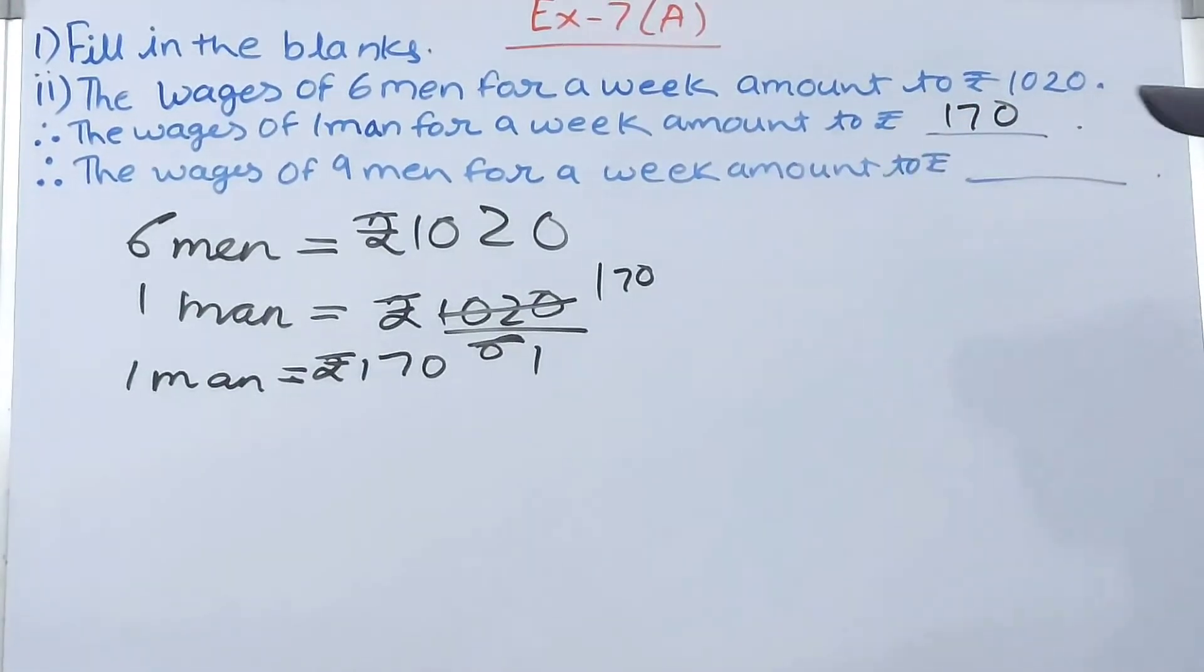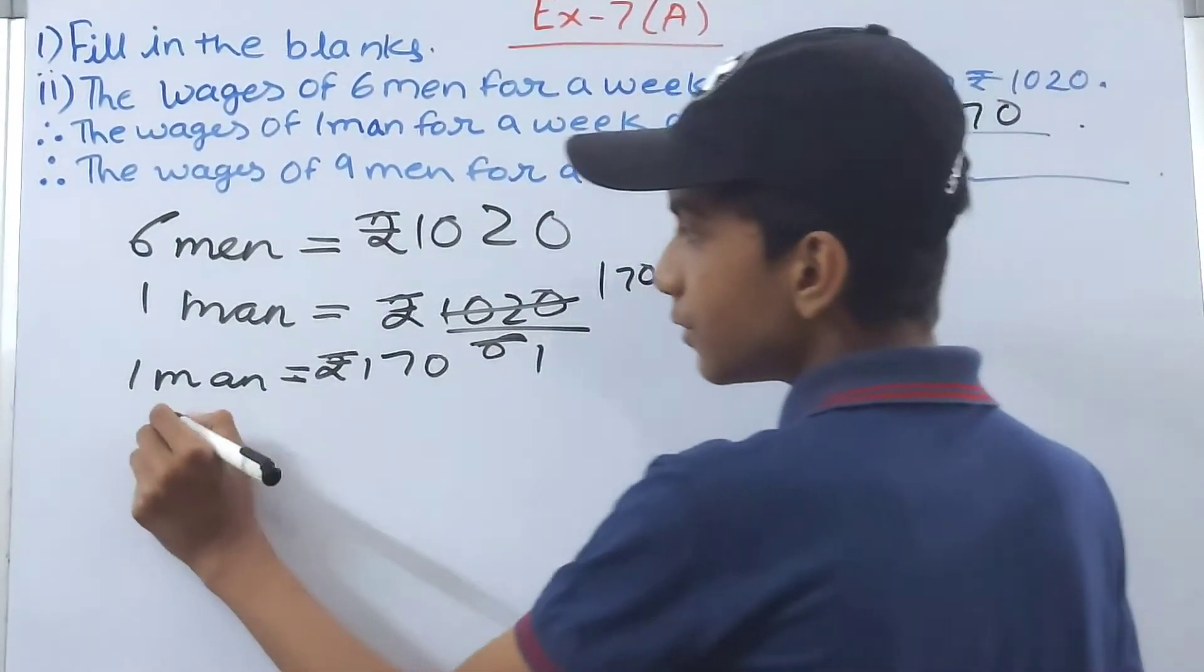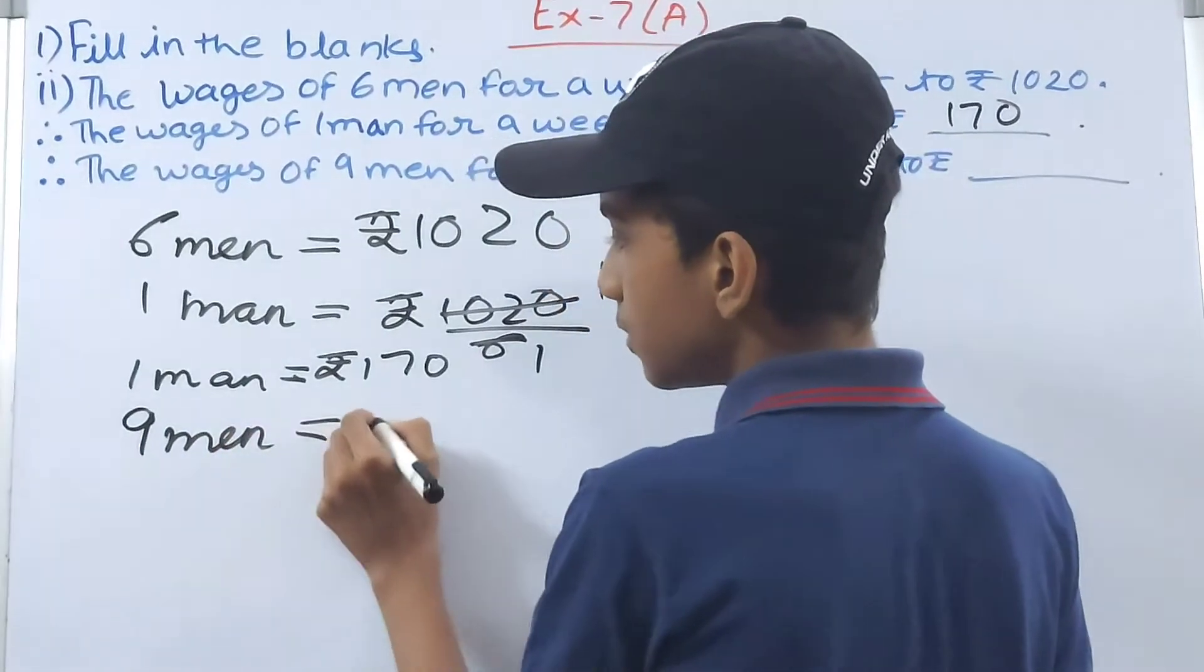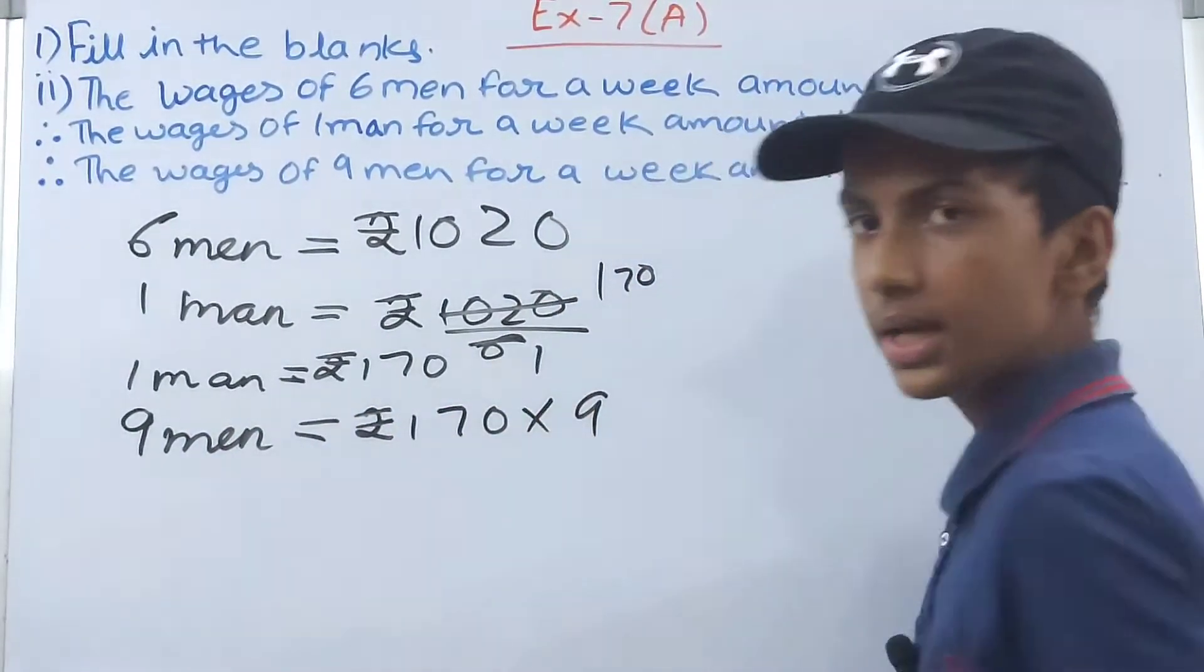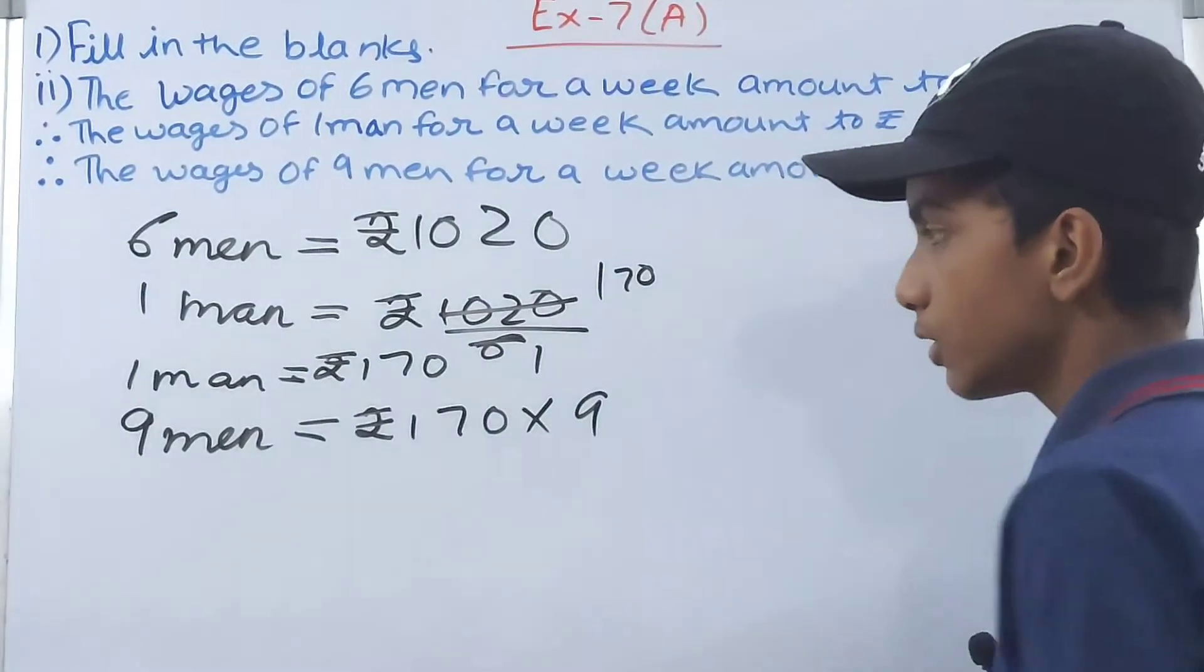So what will we have here? Let's see: 9, 0, 9, 7, 63, and 6, 15. So rupees 1530.